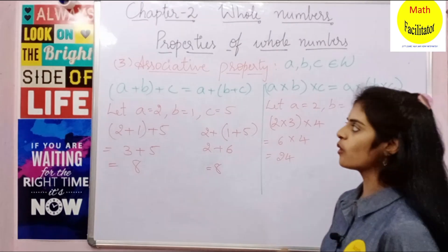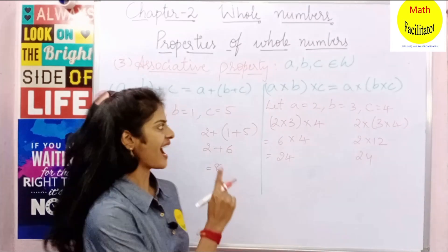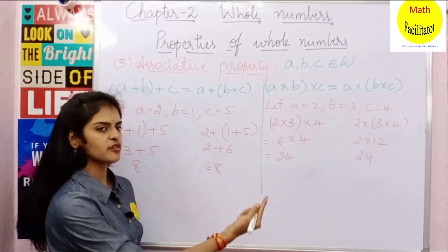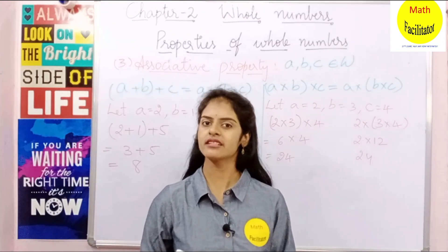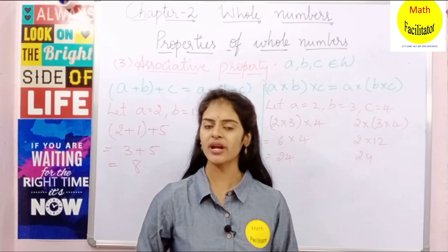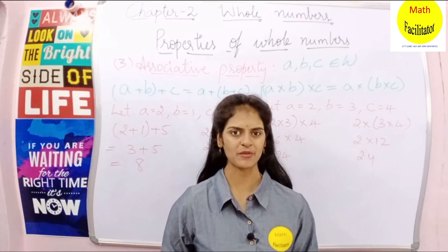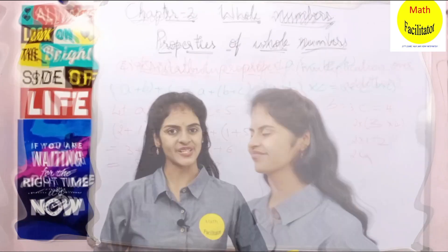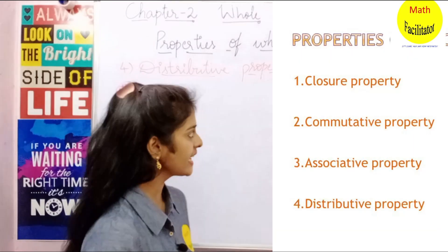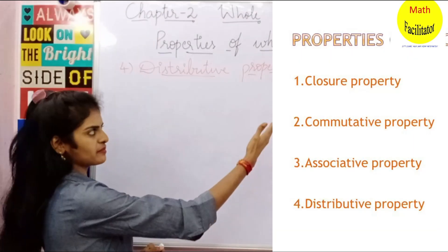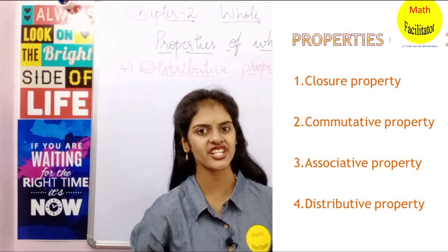So we can see that whole numbers are associative under addition and multiplication. You can check for subtraction and division also but they don't satisfy. Now the next property is distributive property of multiplication over addition.